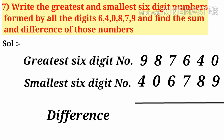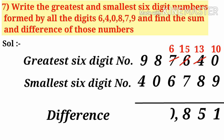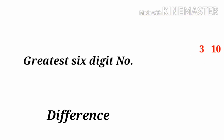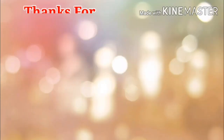Now find the difference. We cannot subtract 9 from 0, so borrow 10. So 10 − 9 = 1; 13 − 8 = 5; 15 − 7 = 8; 6 − 6 = 0; 8 − 0 = 8; 9 − 4 = 5. So the total difference is 5,80,851. These are all the Exercise 1.4 problems.